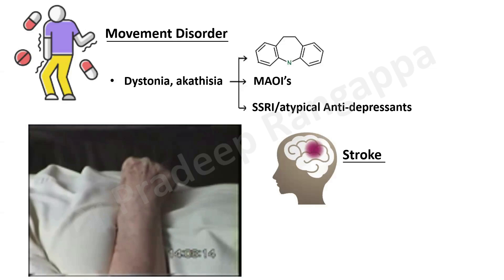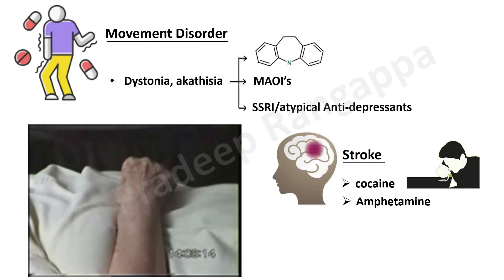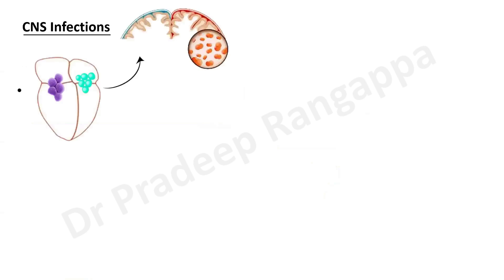Stroke is also a manifestation of acute poisoning — it can happen with cocaine use, or with recreational drugs like LSD, amphetamines, and their derivatives. CNS infections can occur especially in IV drug users who develop infective endocarditis, which can lead to meningoencephalitis or cerebral abscesses through systemic embolization. So drug abuse can result in endocarditis leading to meningitis and cerebral abscesses.